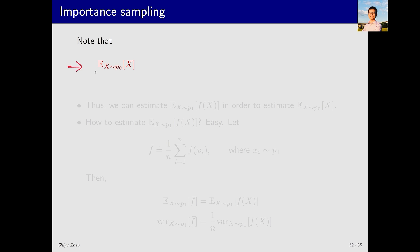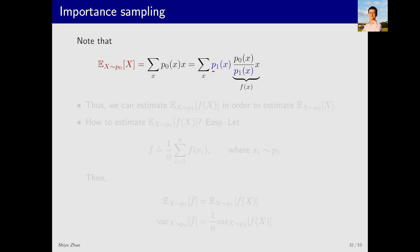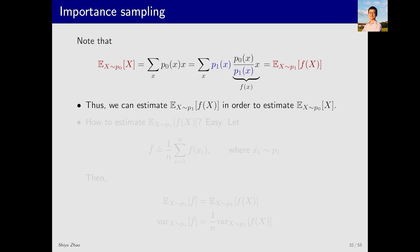Now let me introduce the importance sampling technique. The following equation is crucial. The expectation of x where x follows p0 equals, by definition, the sum over all x of x multiplied by its probability p0(x). It does not change when we multiply and divide by p1(x). We define f(x) = p0(x)/p1(x) * x, and then the expectation can be rewritten as the expectation of f(x) where x follows p1. This allows us to approximate the original expectation using samples generated from p1.